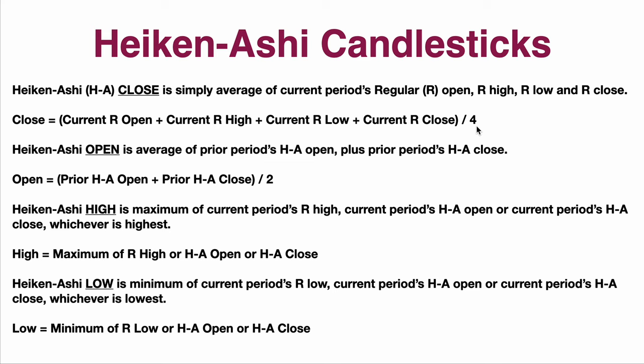Let's go to the Heiken Ashi open. That is the average of the prior period's Heiken Ashi open plus the close, divided by two — that's the average. You add them together.